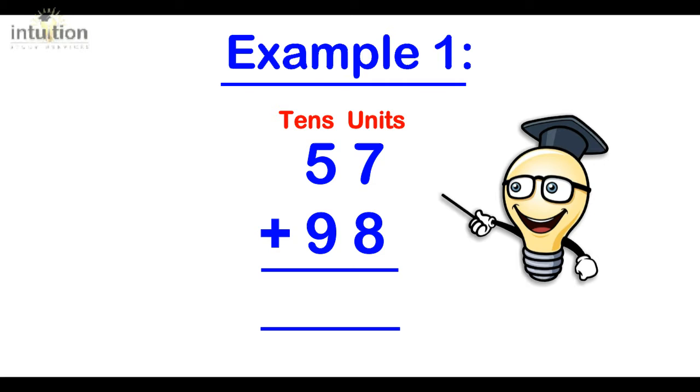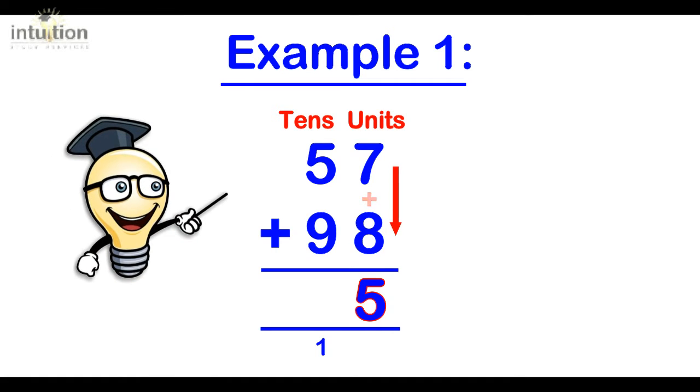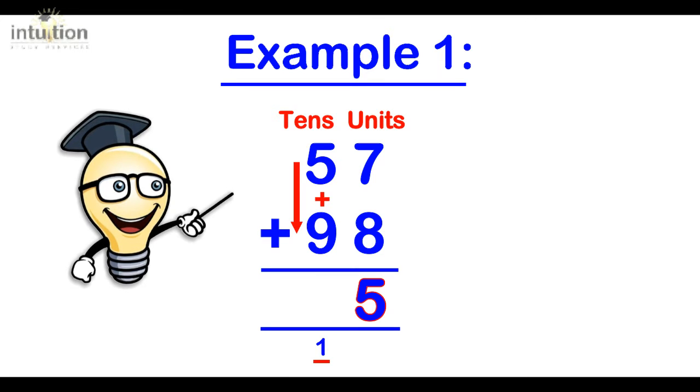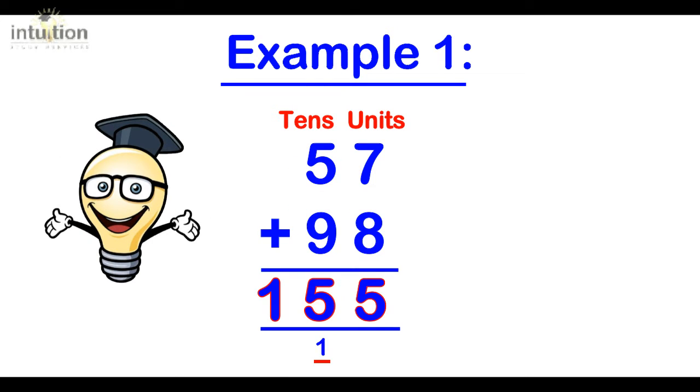So we would normally do 7 plus 8 which is 15 and since that's a double digit number we carry the 1 and then we would add the tens column. So we do 5 plus 9 which is 14 and adding that 1 from before makes 15. So the answer is 155.